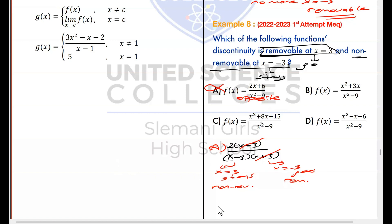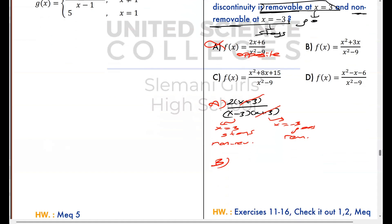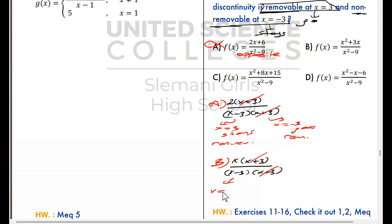Option B: take x out as a common factor — x(x plus 3) divided by x squared minus 9, which is (x minus 3)(x plus 3). x plus 3s cancel each other; x minus 3 stays. Just like option A: x equals 3 is non-removable, x equals negative 3 is removable. It's also the opposite. So option B is also false.